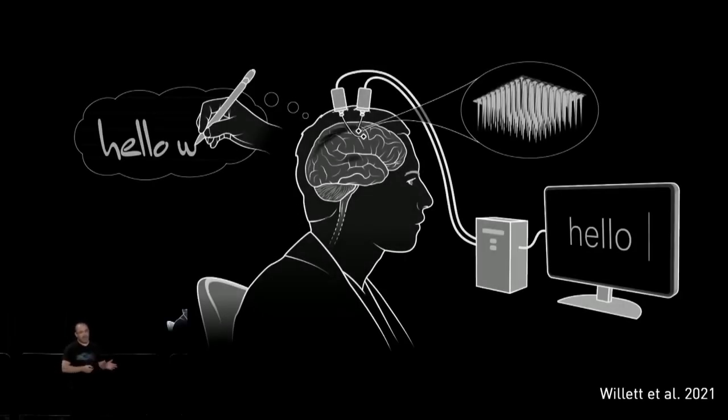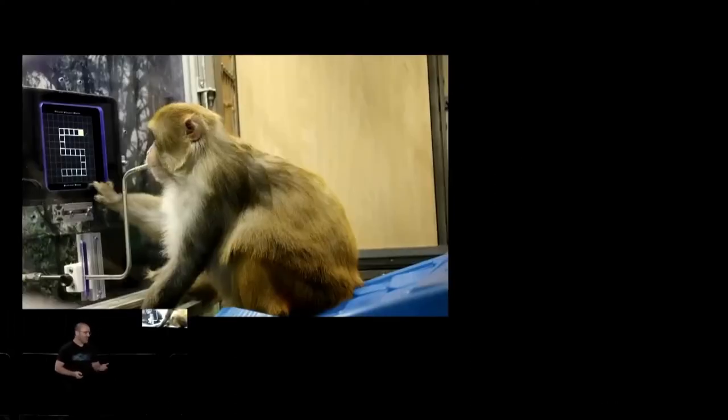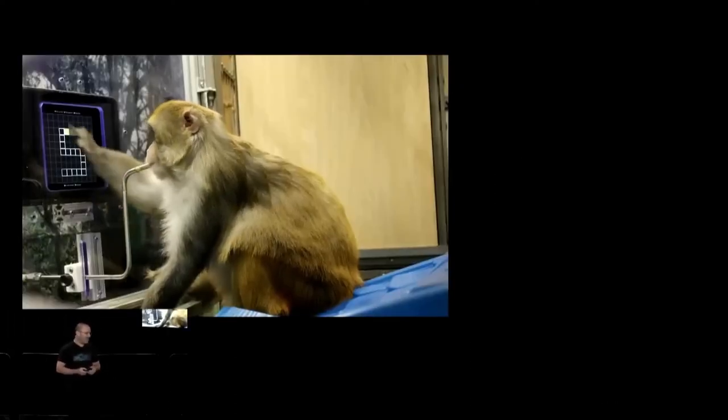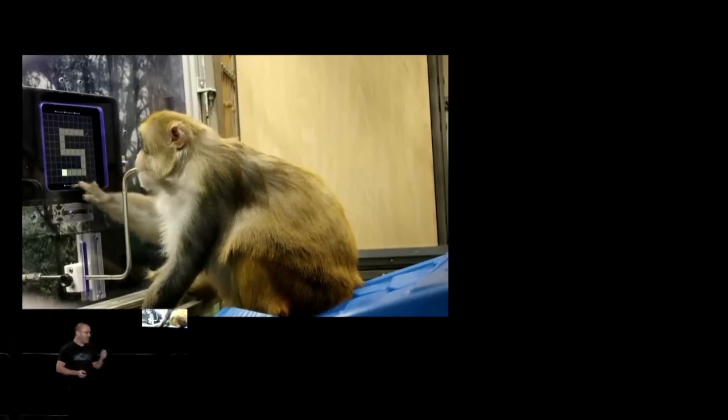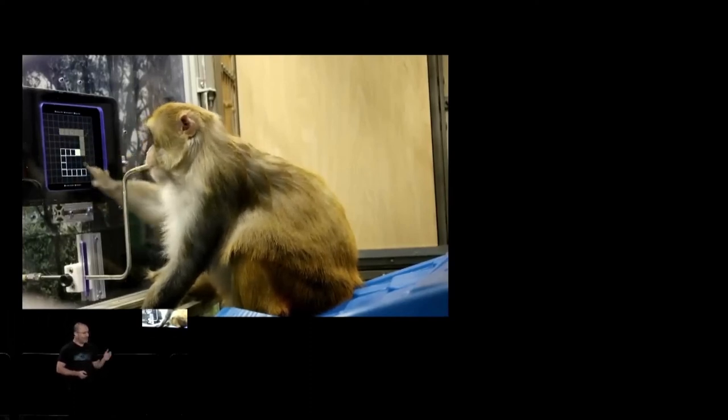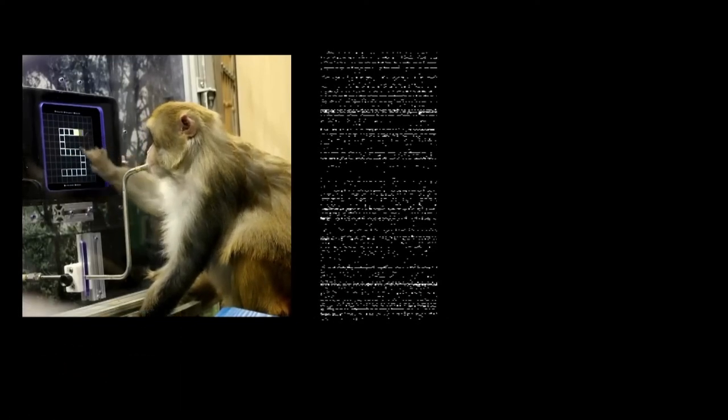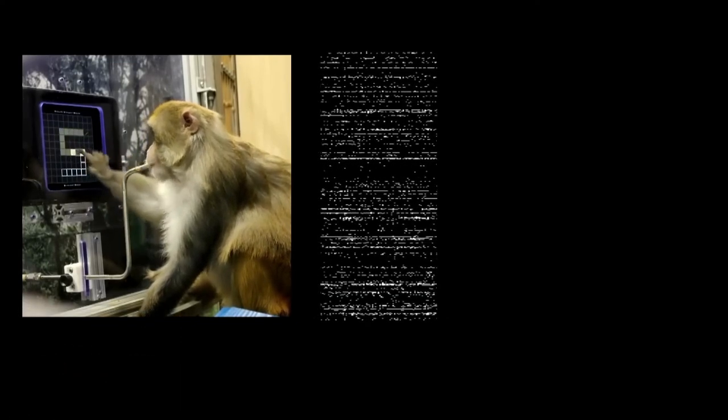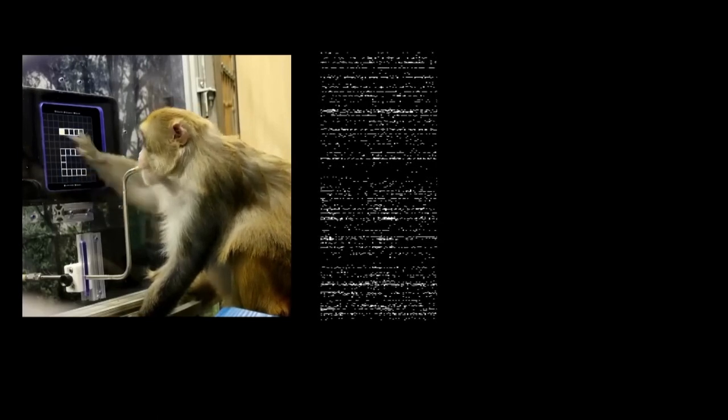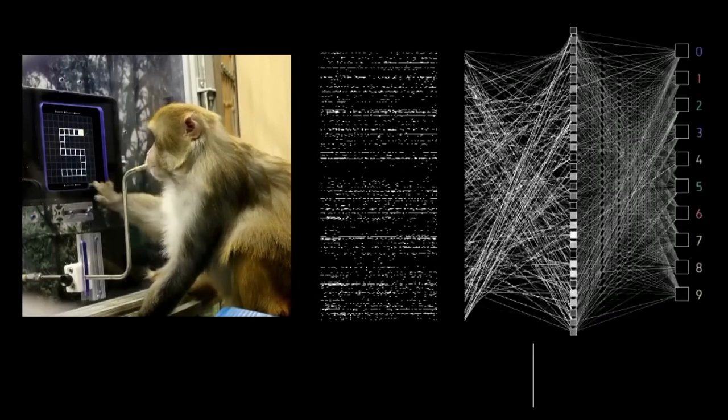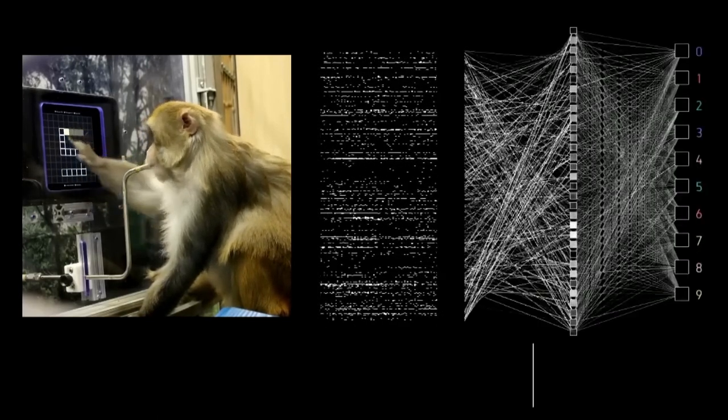We started this project with our monkeys, but of course they don't know how to write. To mimic writing, we trained Ranger, one of our favorite monkeys, to trace digits on an iPad. Here you can see him tracing the digit 5 and the digit 2. Then we recorded his neural activity with the N1 device. But now, instead of decoding the cursor velocity, we decode in real-time the digit that he's tracing on the screen.